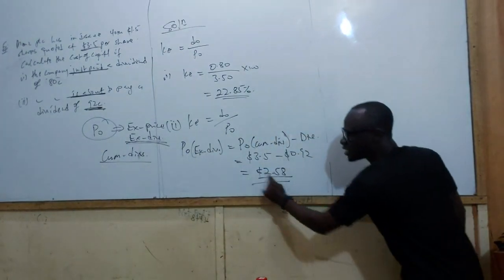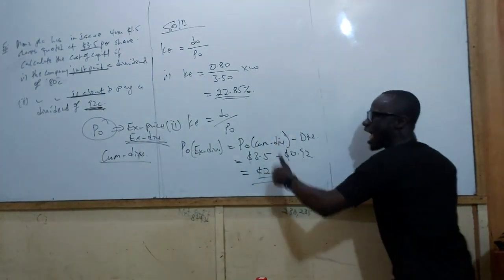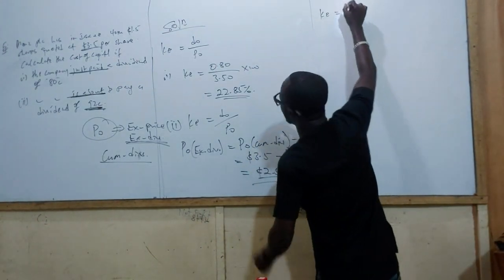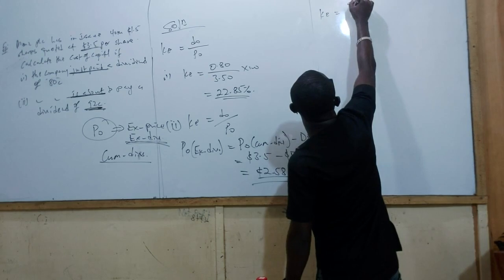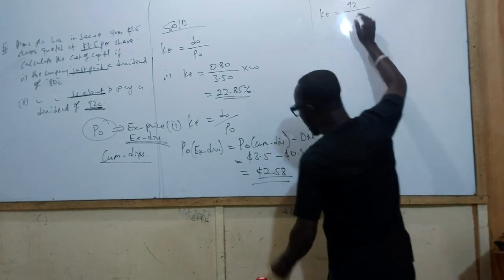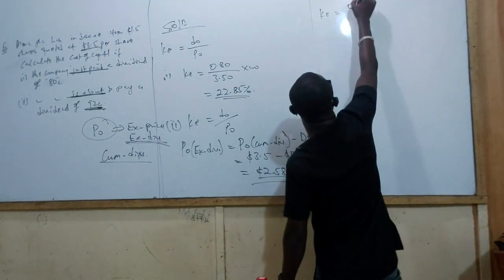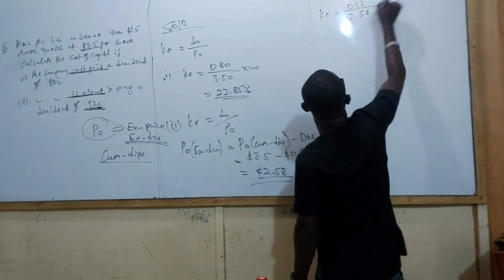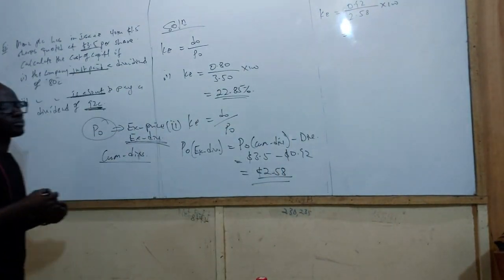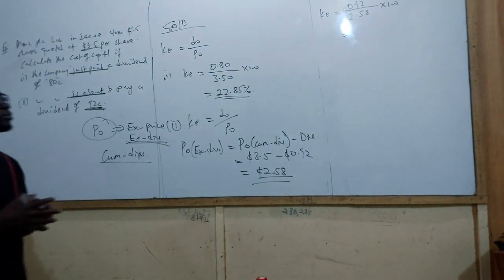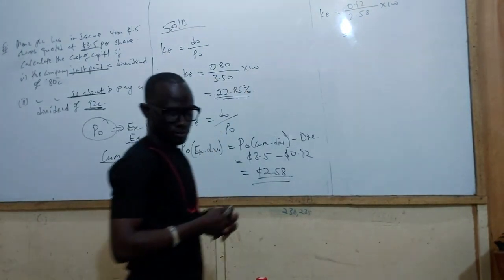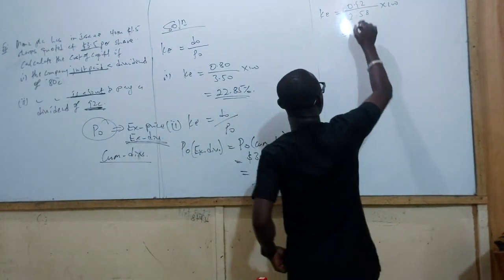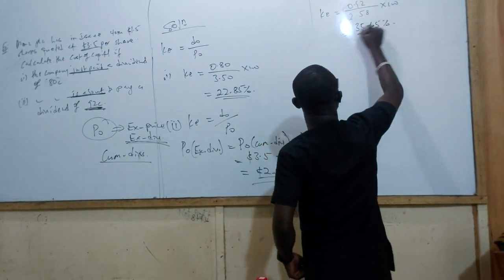Now we use this ex-dividend price to calculate KE. KE equals the dividend of $0.92 over $2.58, which gives approximately 35.66%.